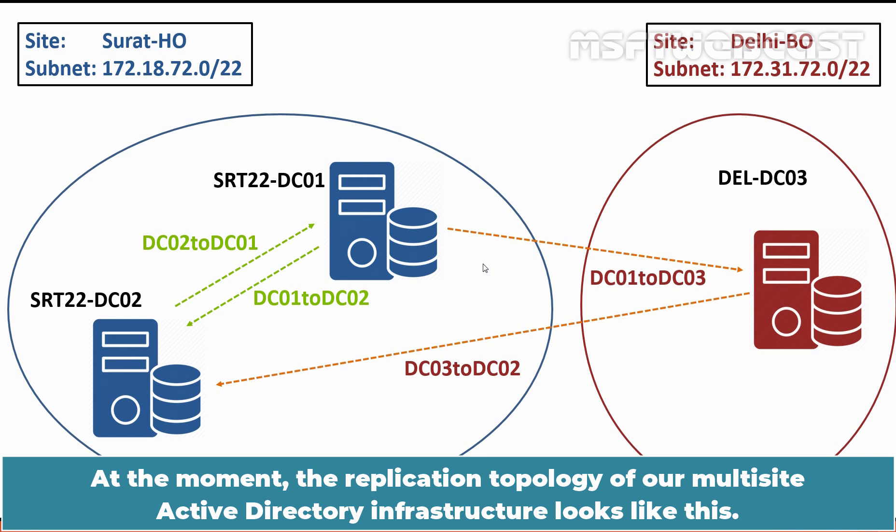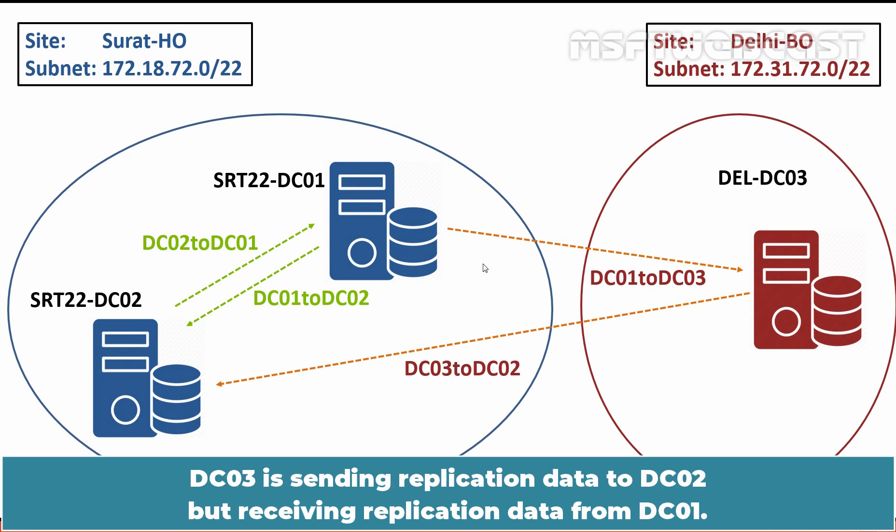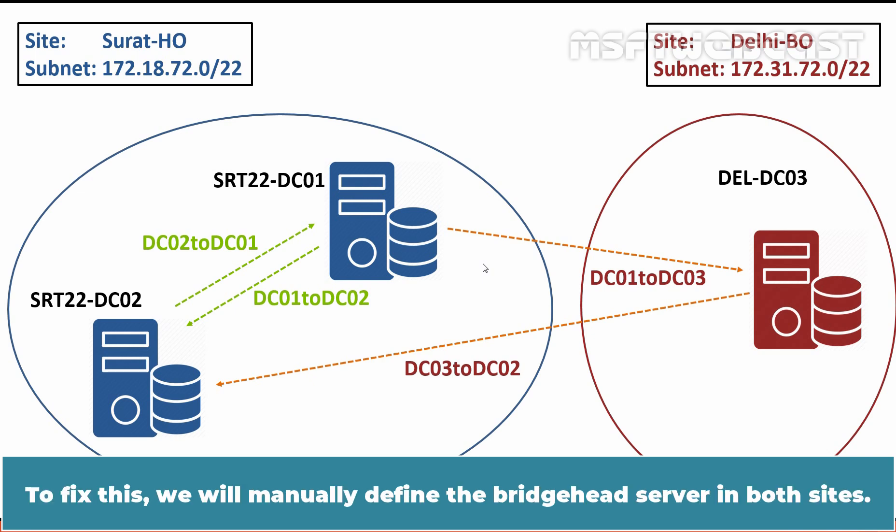Let me show you the current topology. At the moment, the replication topology of our multi-site Active Directory infrastructure looks like this. Since we haven't defined a bridgehead server in Surat HO site, DC03 is sending replication data to DC02 but receiving replication data from DC01. This replication topology is not optimal. To fix this, we will manually define the bridgehead server in both sites.